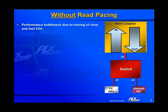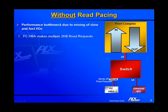Without Read Pacing, performance bottlenecks can occur due to the mixing of slow and fast I/Os through the same switch. In this example, the fast I/O is a Fiber Channel HBA, and the slow I/O is a Gigabit Ethernet NIC.